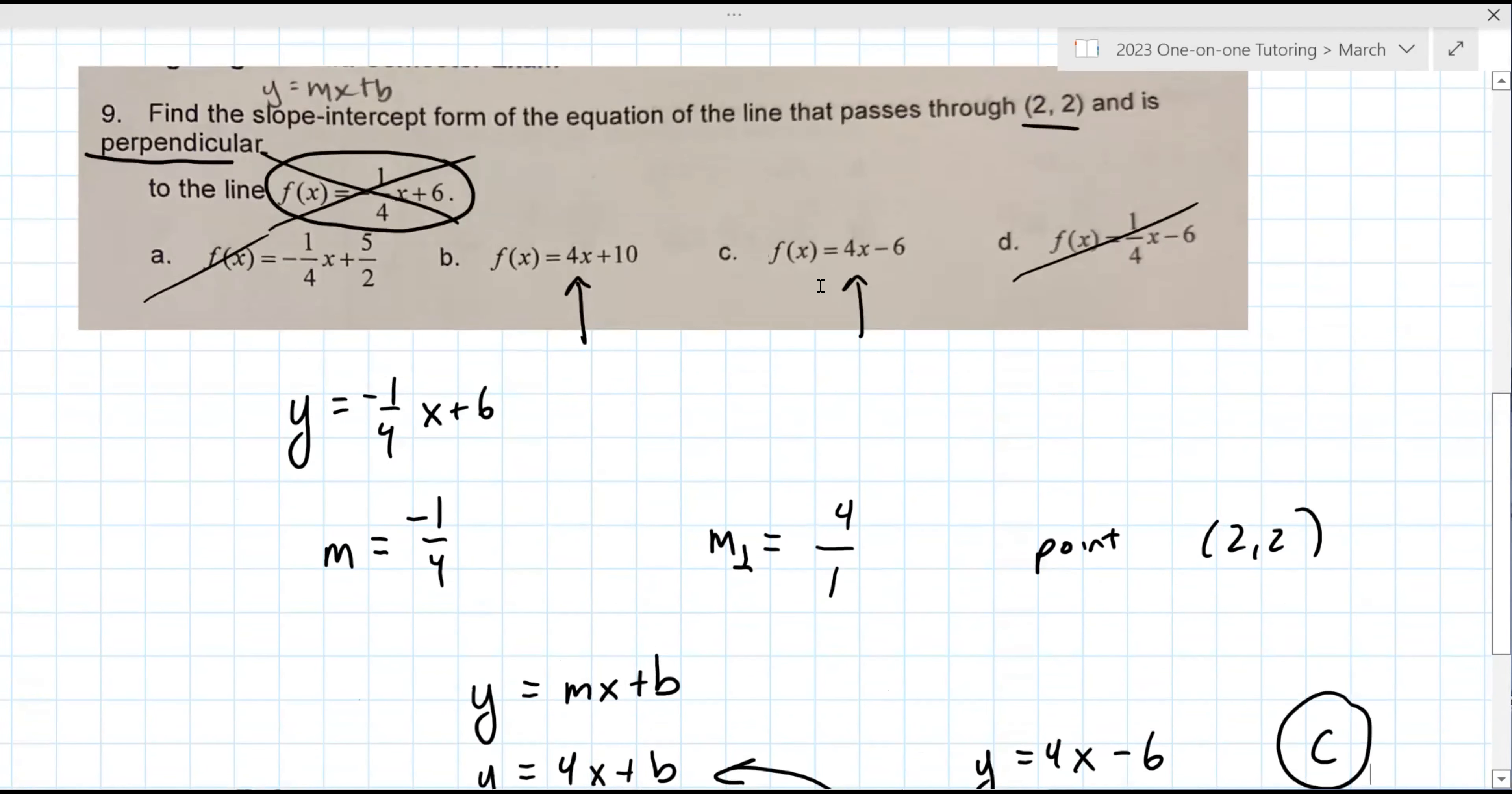I think we usually do point-slope form. This one is in slope, all the answers are in slope-intercept form. So I'm going off of what's here. But you're right, you could do it in any form that you want. But because it's multiple choice, this is kind of standardized test stuff. You have to do it in the format that's given.